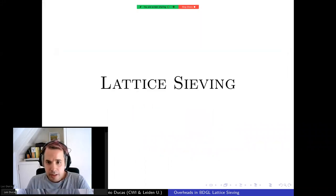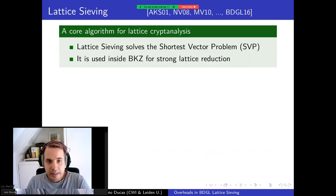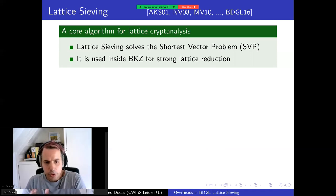So let me start by introducing you to lattice sieving. Lattice sieving is a core algorithm for lattice cryptanalysis. It is currently the fastest known algorithm for solving the shortest vector problem, SVP, and it is rarely used on the whole lattice. It is more generally used inside BKZ algorithm, where it is called inside lattices of smaller dimensions called blocks.